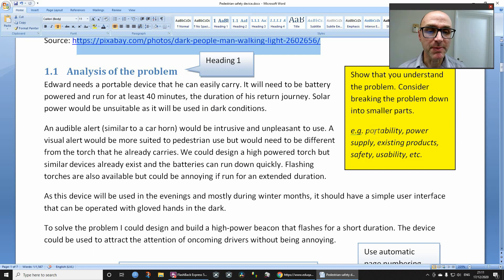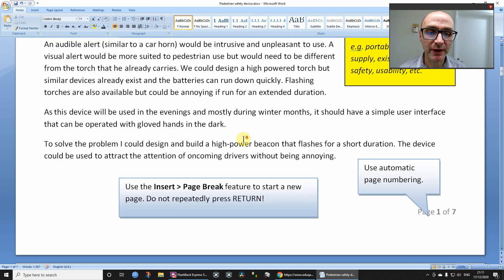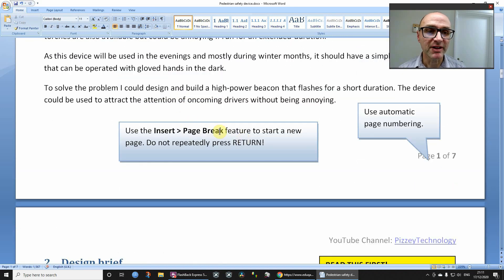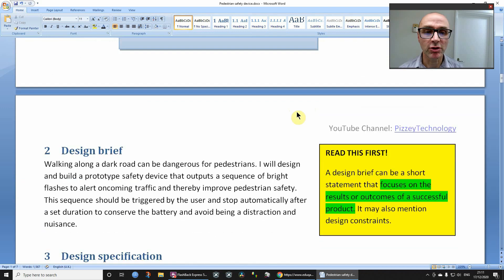So in this particular one, maybe I've considered something like portability, the power supply, existing products that might be available and why they are not suitable or whatever, safety, usability, etc. Okay? Now, there is a general point I've made here. If you're using Word and using a multi-page Word document, then do use the features of Word like heading styles, paragraph styles, inserting page breaks, things like that. I'm going to try not to make this an ICT lesson, but you should be using those things.